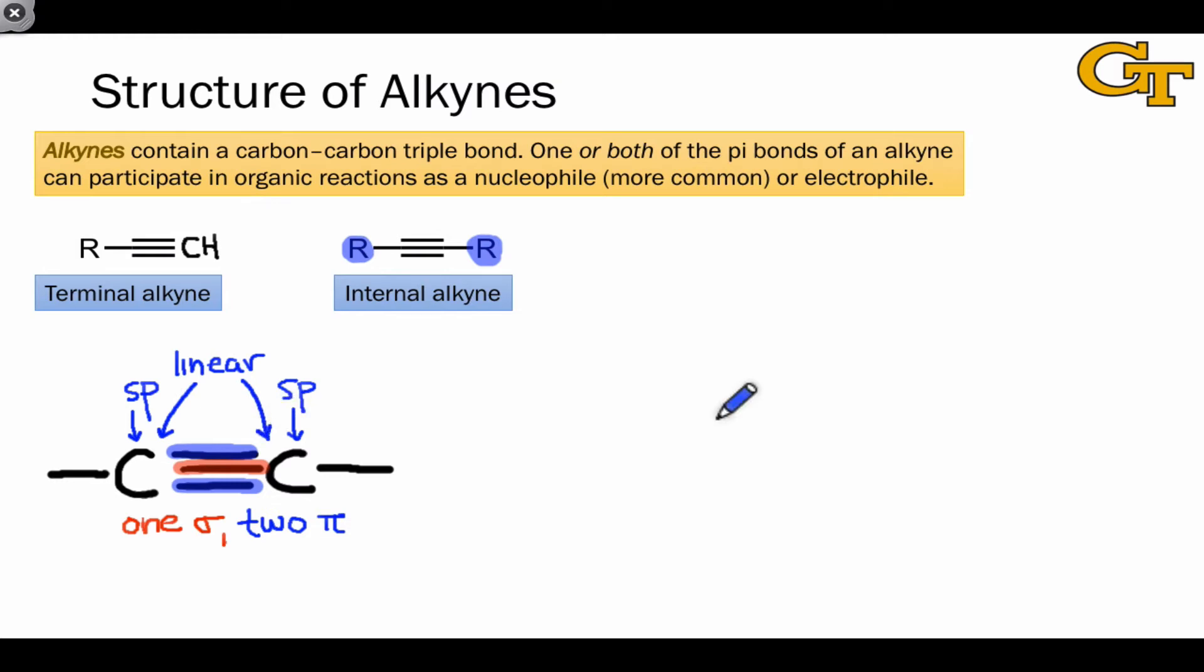We'll see later that the fact that alkynes are linear actually simplifies stereochemical analysis to a degree, since we don't really need to think in three dimensions. In adding to an alkyne, we go from one dimension to two, rather than two dimensions to three, as in additions to an alkene.